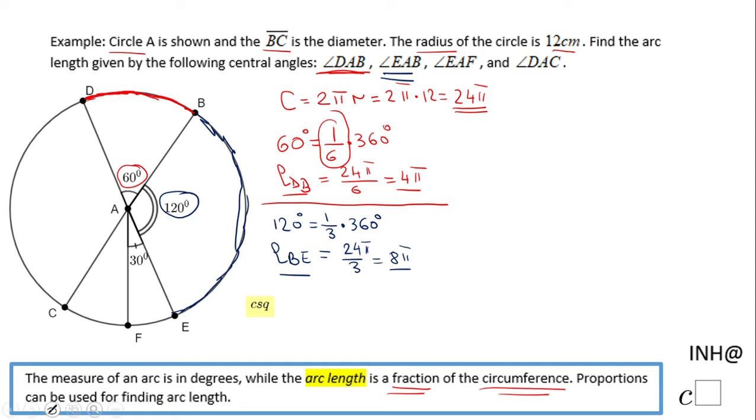And then let's move to the next one, which is angle EAF. EAF is this angle of 30 degrees. And I'm going to go here on the right side. And again, 30 degrees is 1/12 of 360 degrees.